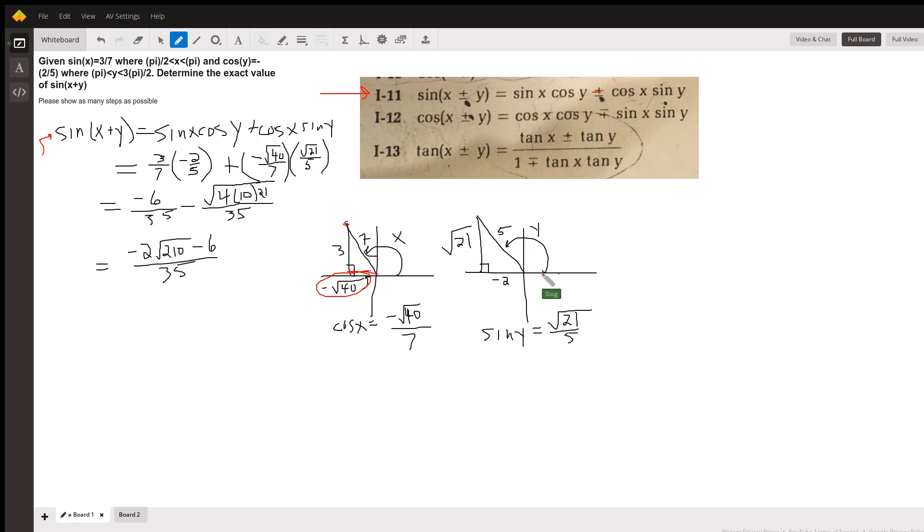And likewise for y, y is in the second quadrant and has a cosine of negative two fifths, which means the y coordinate of this point by the Pythagorean theorem is the square root of 25 minus 4, which is 21. So we get the sine of y is the square root of 21 over 5, opposite over hypotenuse.